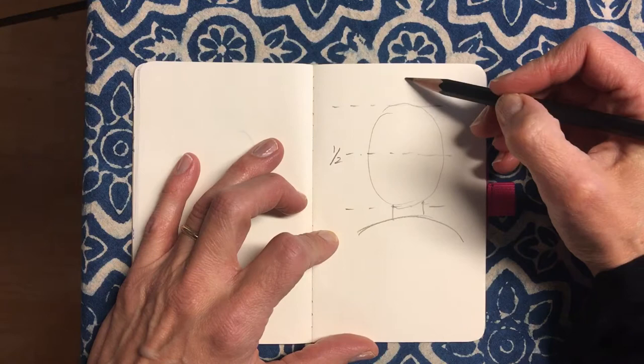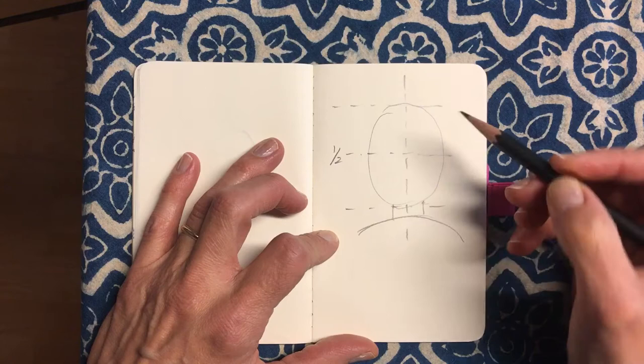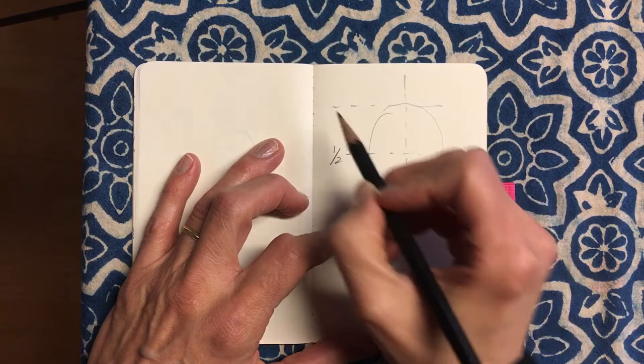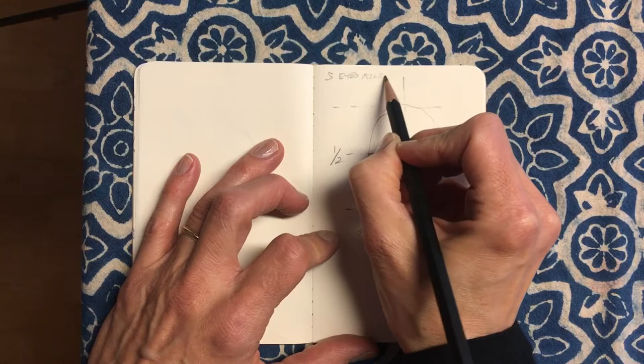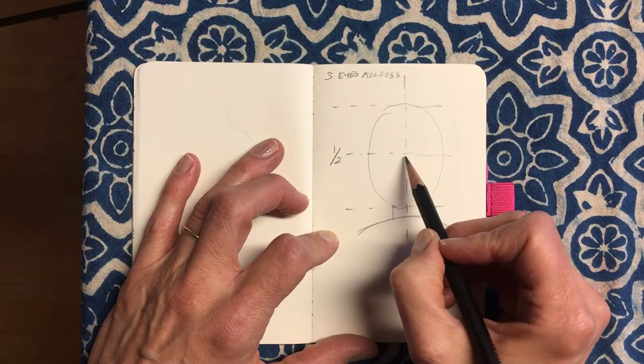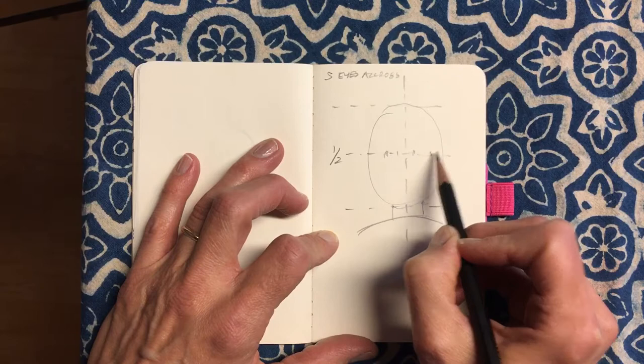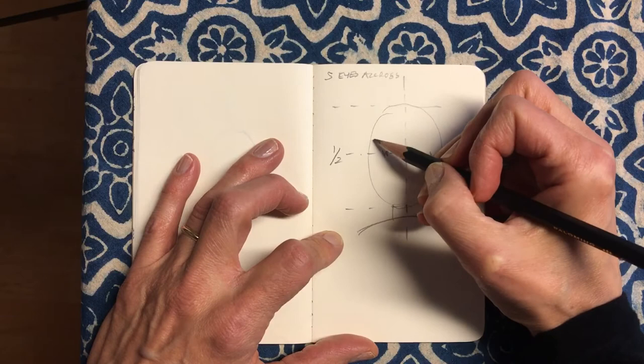So right down the middle, then five eyes across. Five eyes across, not such a good speller, I don't know if I got that right. So I'll kind of, so about five, maybe that's one, two, three, four, five. Five-ish. The five includes the ears.